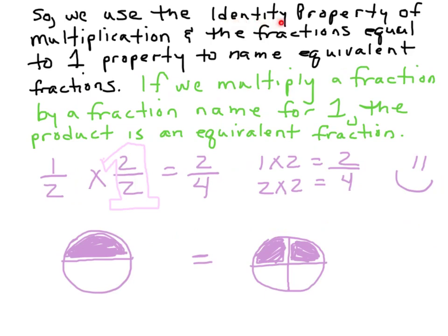We're going to use the identity property of multiplication and the fractions equal to one property to name equivalent fractions. If we multiply a fraction by a fraction equal to one, the product is an equivalent fraction. So if I say one half times two over two — remember, two over two is another name for one, so here's my giant one — that's going to equal one times two is two, two times two is four: two fourths. We know that one half definitely equals two fourths.